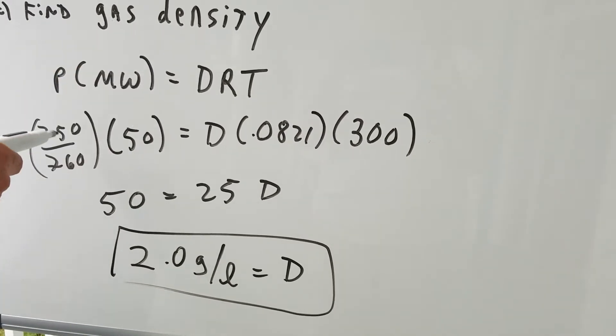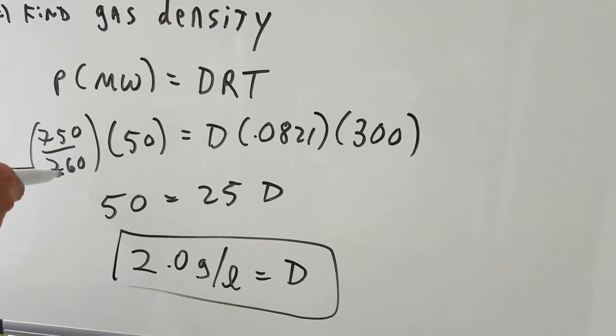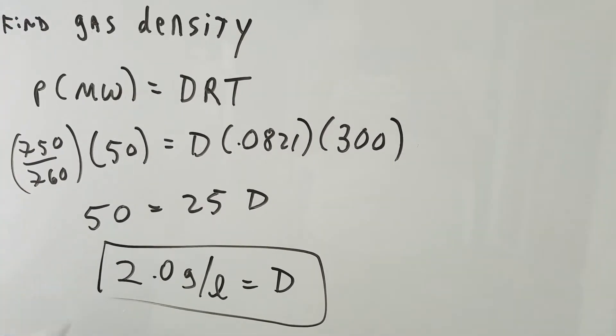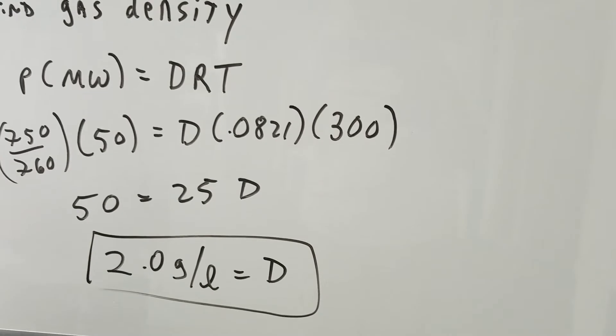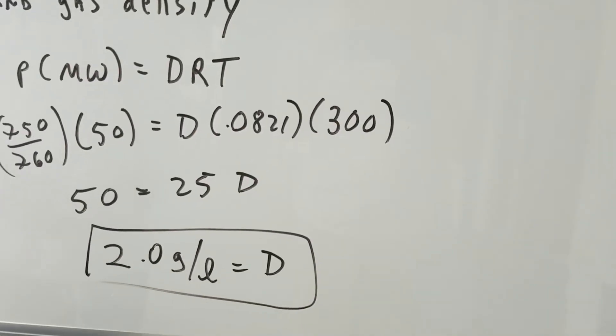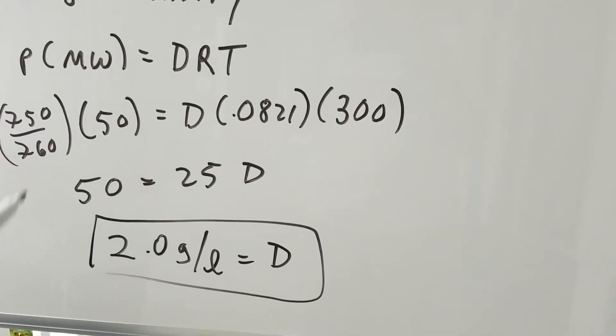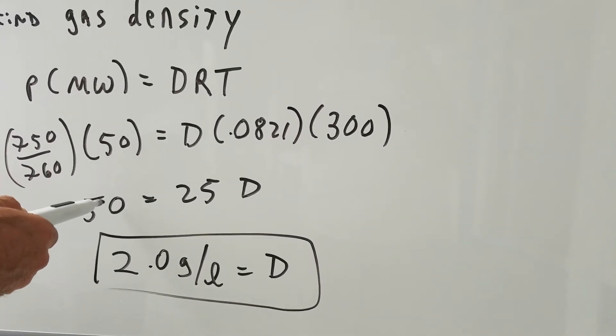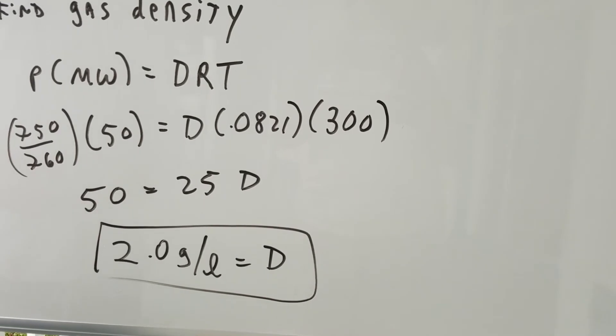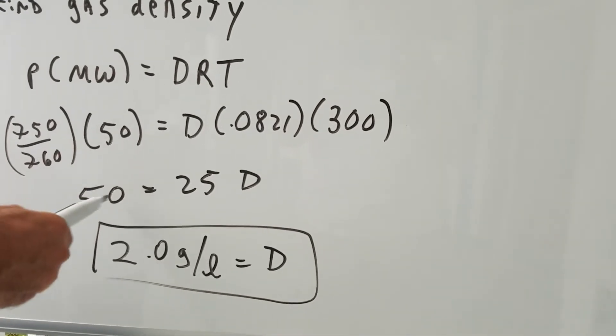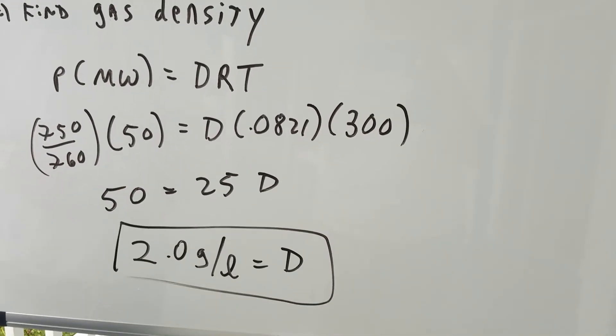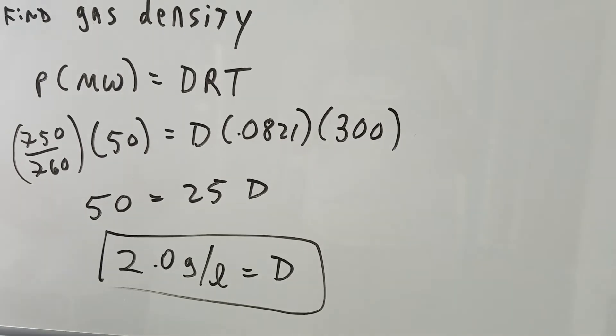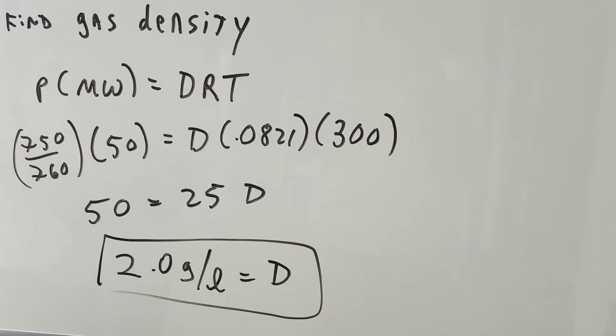So what you're going to do is simply plug in. You have 750 over 760 for the pressure. We already found the molecular weight, which is 50, the R and the T. We already evaluated before. 750 over 760 is very close to 1. Now, look how nice the numbers are. The numbers will be very nice like this on the actual DAT exam. So this becomes 50 over 25 and you come in for the kill to get 2.0 grams per liter for the density.